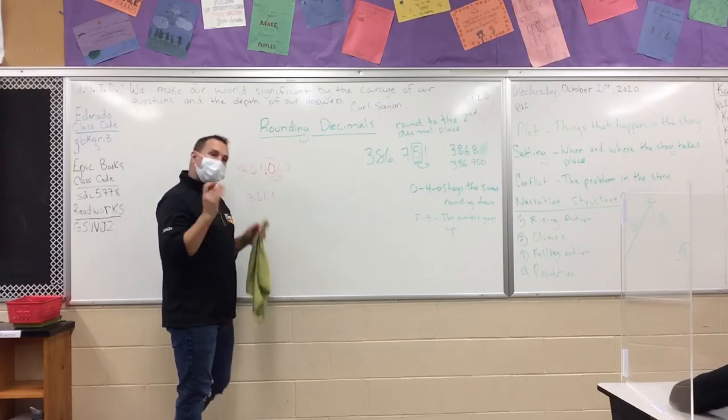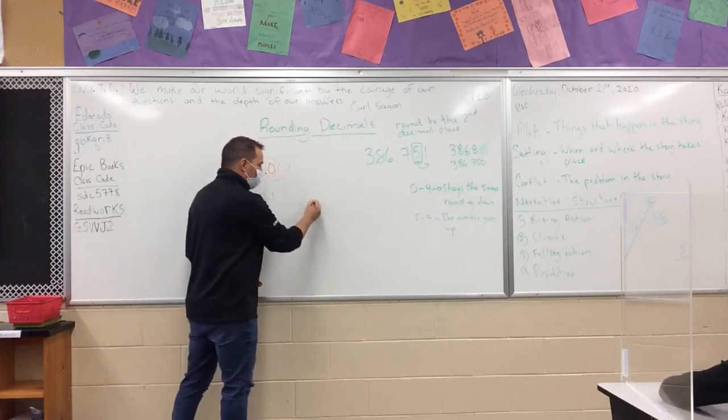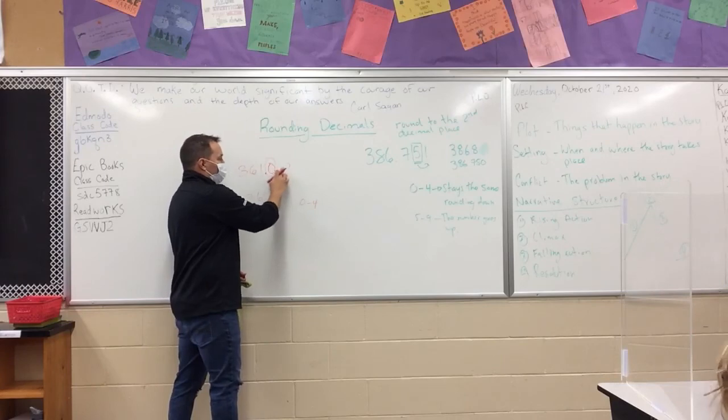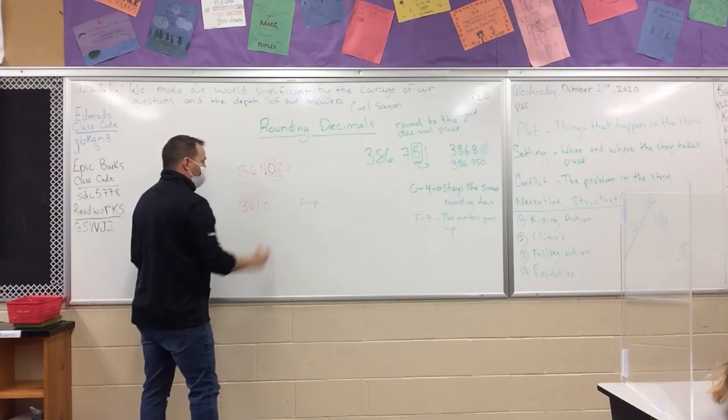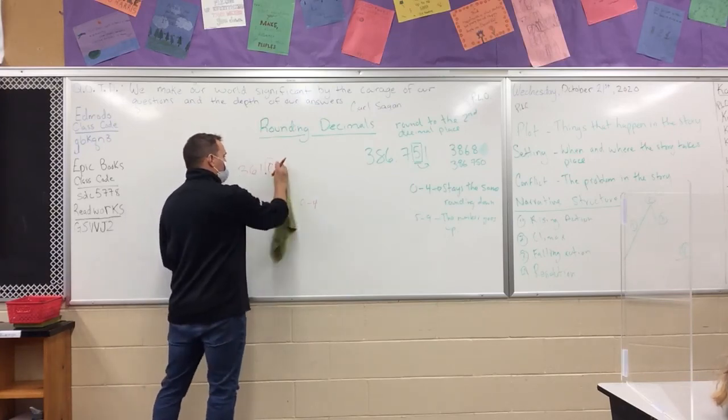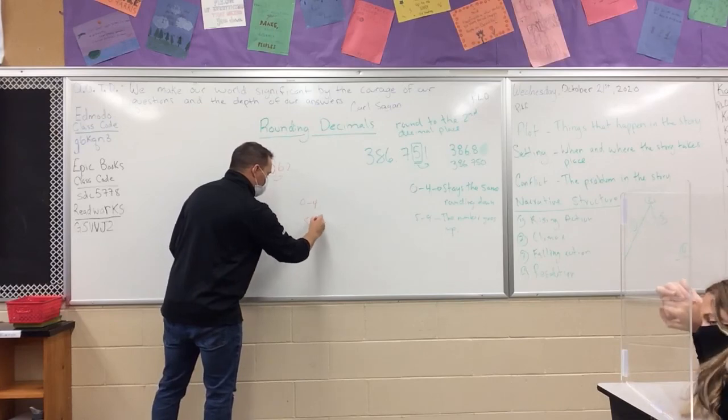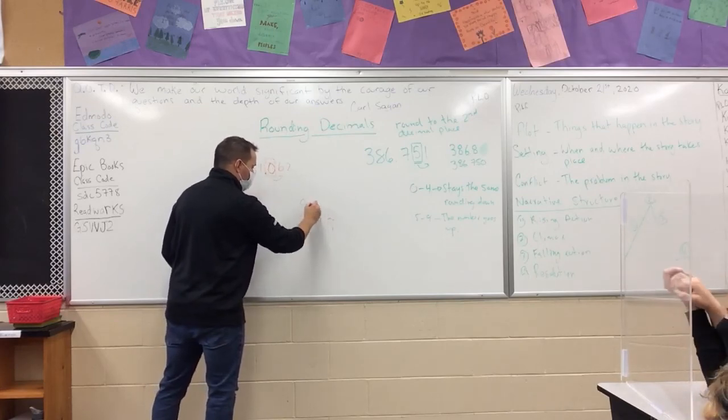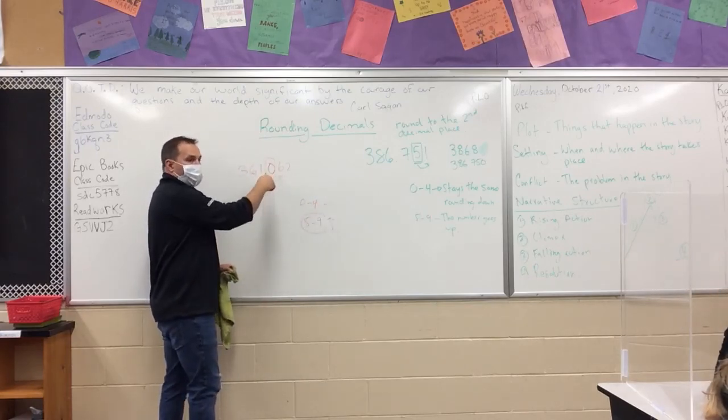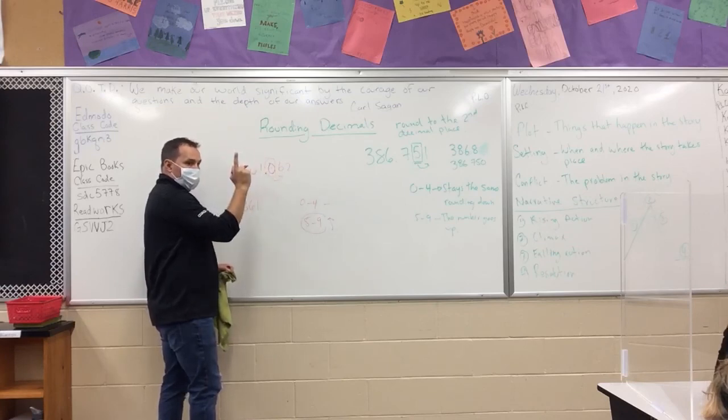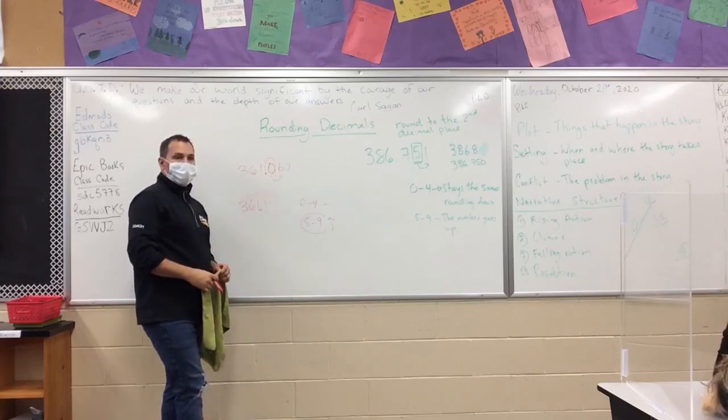Keep it at the number it is or round it up. Those are the two rules. If the number beside it is zero to four, you keep it there. If this was two, then the number would become 361.0. But because the number beside it was six, we know that if it's five to nine it's got to go up. If it's zero to four it stays the same. So this one has to go up. From zero it goes up to one, 361.1.